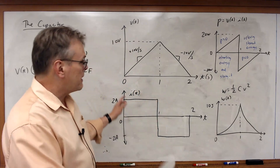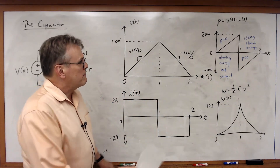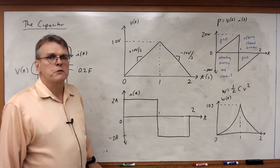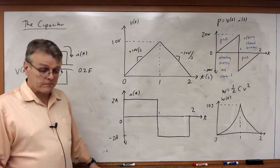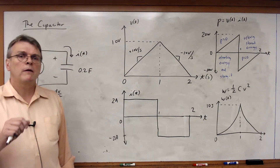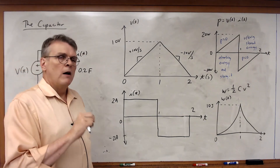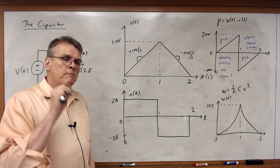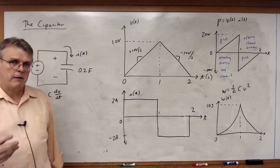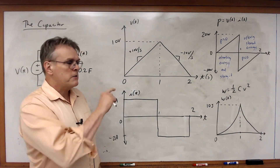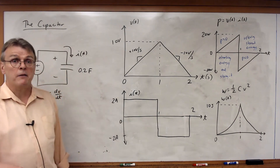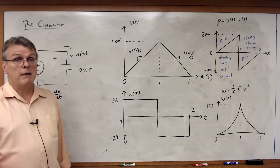So this is a nice simple example that puts all this stuff together and illustrates these relationships. Next time we will go to the next step and look at how we can combine capacitors. Just as we combine resistors in series and parallel combinations, it turns out we can do exactly the same thing with capacitors. So let's take a look next time at the equations we need to describe that.